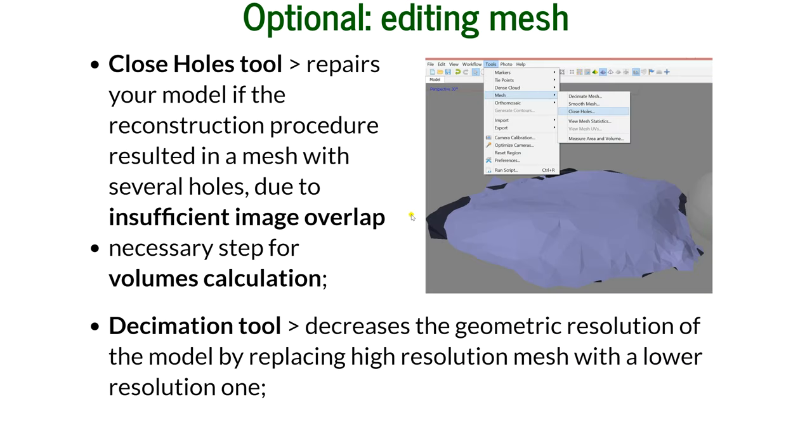There's also decimating mesh, which decreases the geometric resolution of the model by replacing high resolution mesh with a lower resolution one. It's necessary sometimes if you have a limit for the size of your final 3D model. As I mentioned before, the more faces, the larger is your final 3D model.